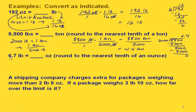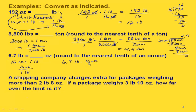Now let's convert from 6.7 pounds to ounces, rounding to the nearest tenth of an ounce. For our unit fraction, we know that 16 ounces is equal to 1 pound. We want pounds to go on the bottom since that's the unit we started with, and ounces to go on the top since that's what we're converting to. So we have 6.7 pounds times 16 ounces over 1 pound, written over 1. Our pounds cancel out and we're left with ounces.